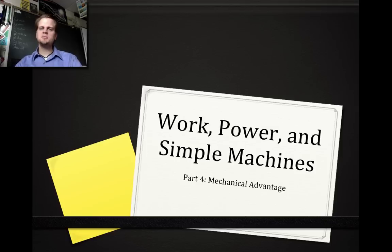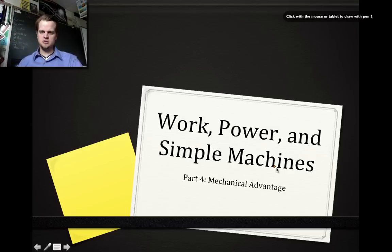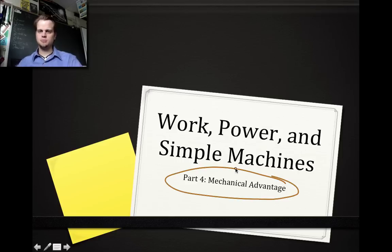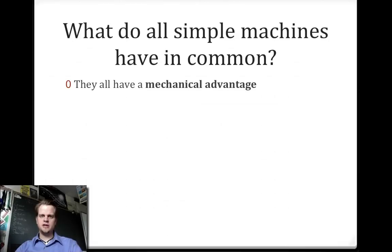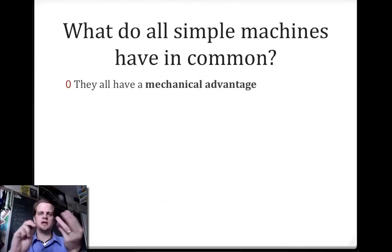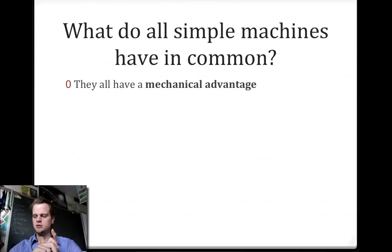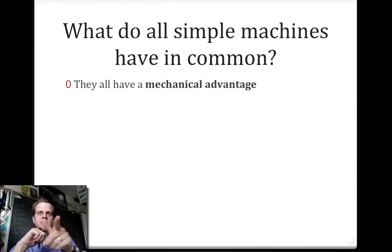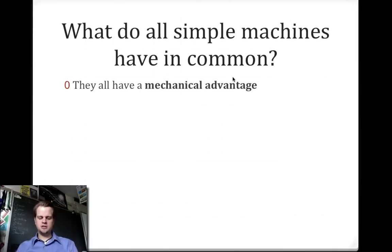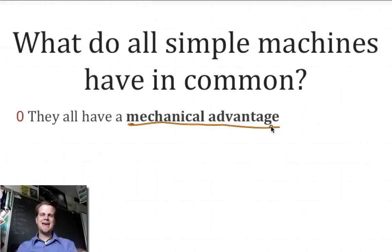Let's start talking about simple machines — not only what they are, but what they actually do. So let's talk about mechanical advantage. What do all simple machines have in common? Whether we're talking about a lever, an inclined plane, a wedge, a screw, or a wheel and axle — what they all have in common is mechanical advantage. There's an advantage to using them, and it's mechanical in nature.